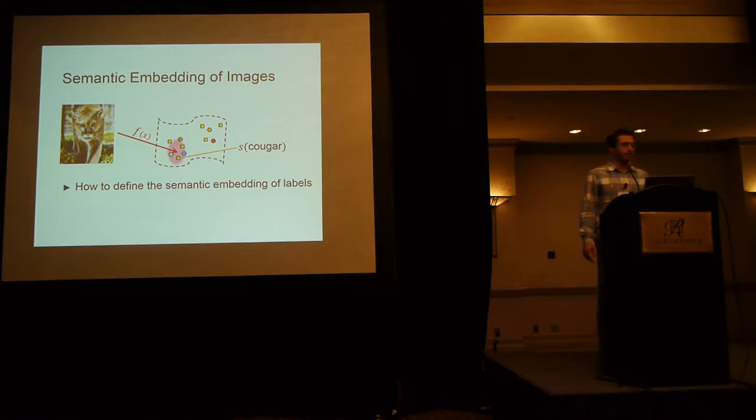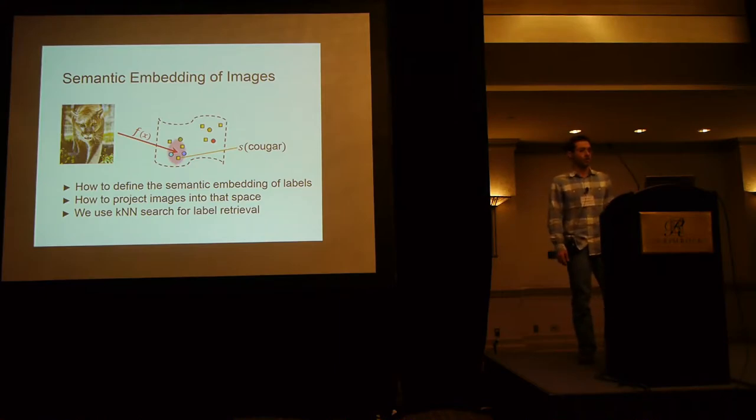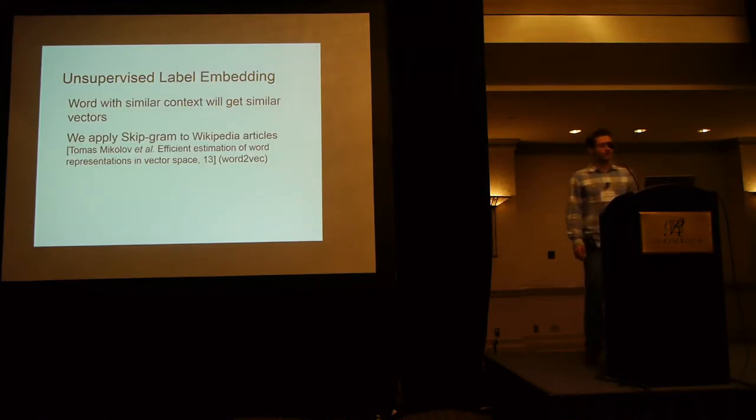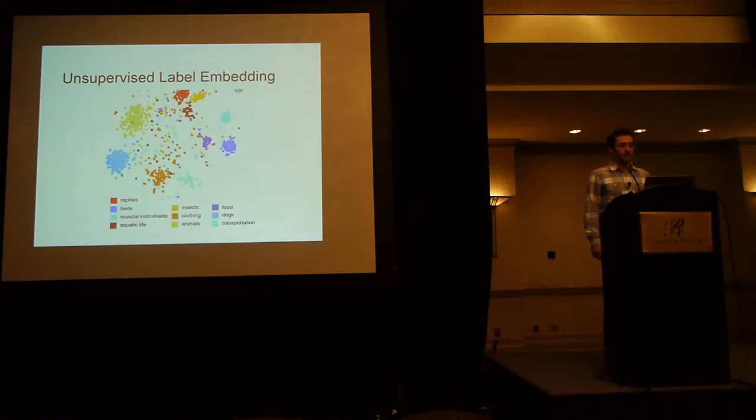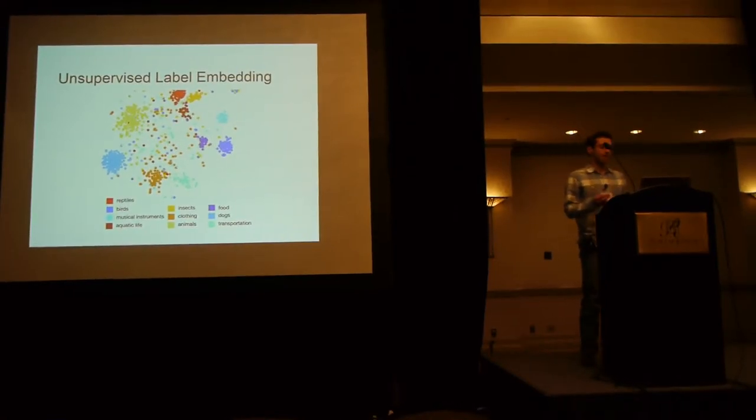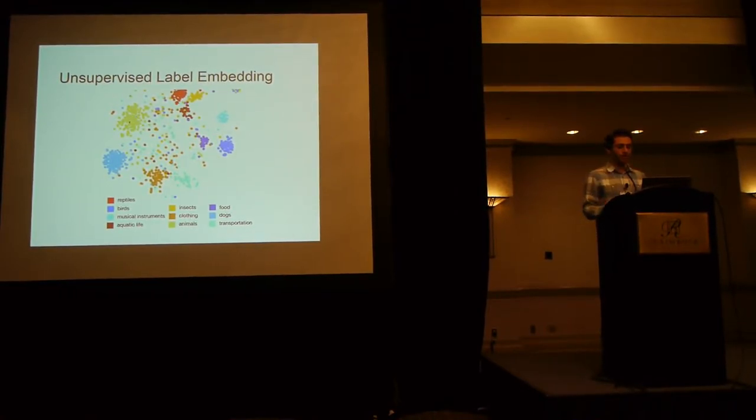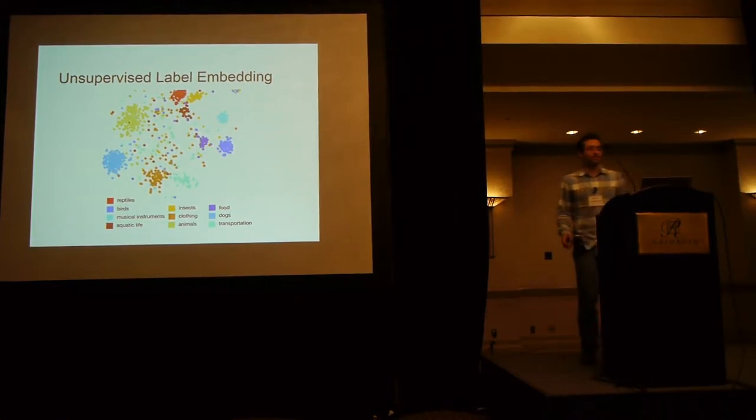Now, there are a few research problems here. One is how to define the semantic embedding of labels. Second, how to project images into that space, and we simply use k-nearest-neighbor search for label retrieval. For unsupervised label embedding, we use the skip-gram of Tomash Mikolov and colleagues. The idea is that words with similar context will get mapped to similar vectors in the semantic space. And as a sanity check, we just visualize labels from ImageNet, and we see that images corresponding to different types of bears, different types of clothing, and different musical instruments, for example, cluster nicely in this space. This is a 2-D t-SNE visualization of the 500-dimensional vectors corresponding to each label.